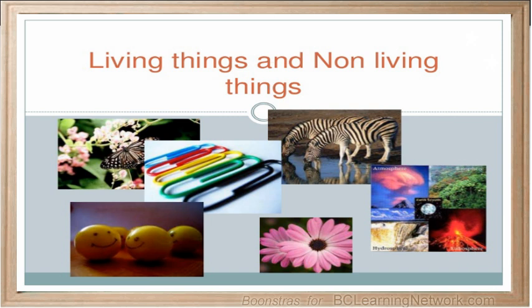If something exhibits only one or just a few of these characteristics, it does not necessarily mean that it is living. For example, fires grow, but flames are not considered living things. To be considered alive, an object must exhibit all of the characteristics of living things.